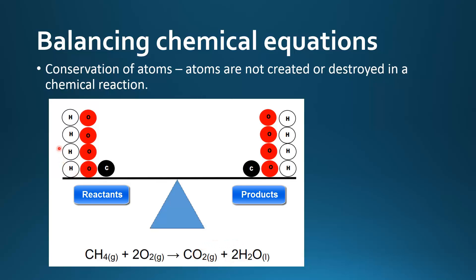On the left side we have 4 hydrogen atoms, 4 oxygen atoms, and 1 carbon atom. On the right side we have 1 carbon atom, 4 oxygen atoms, and 4 hydrogen atoms. So we have the same number of atoms in the reactants and the products. This is why we have to balance our chemical equations.